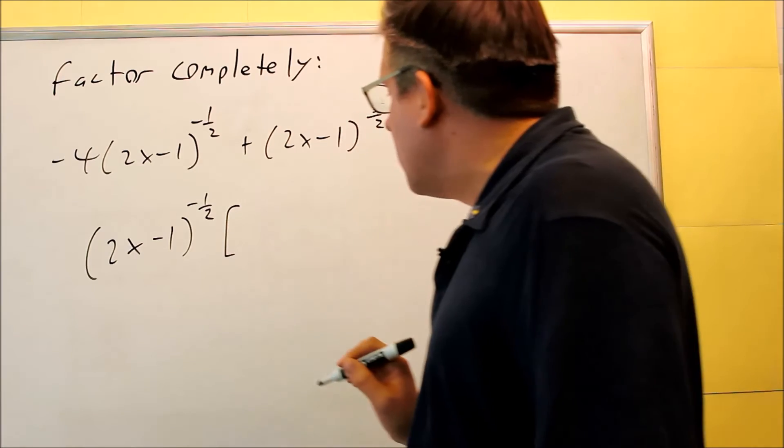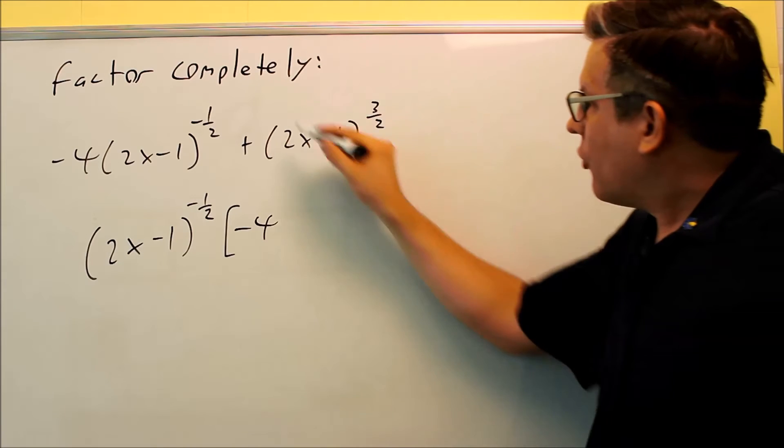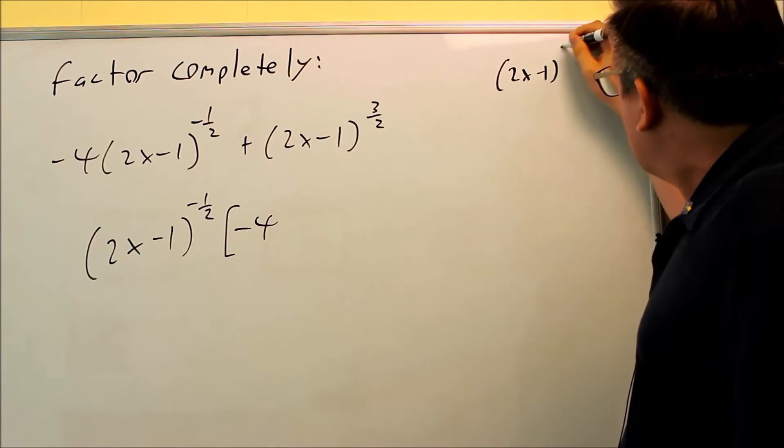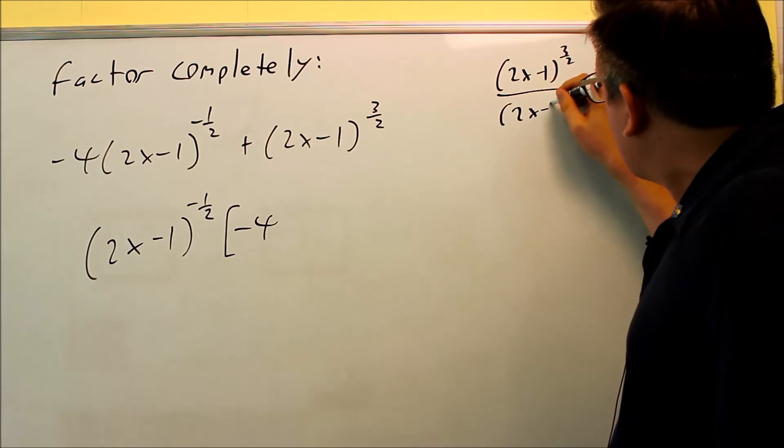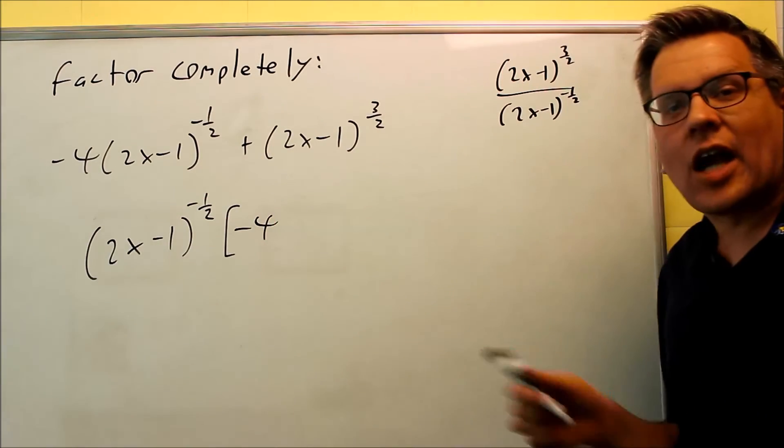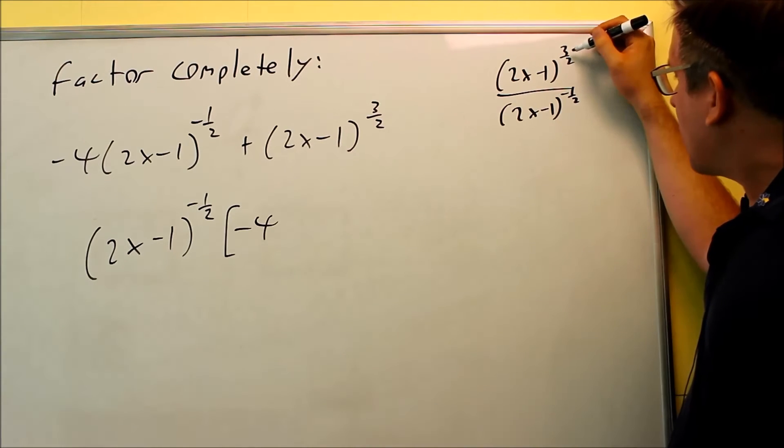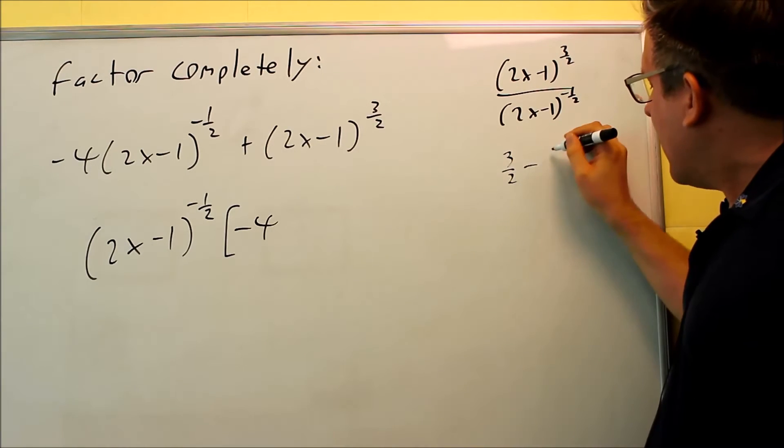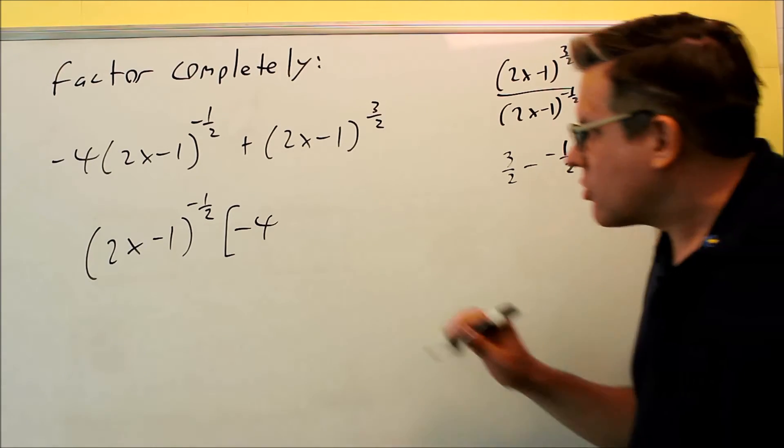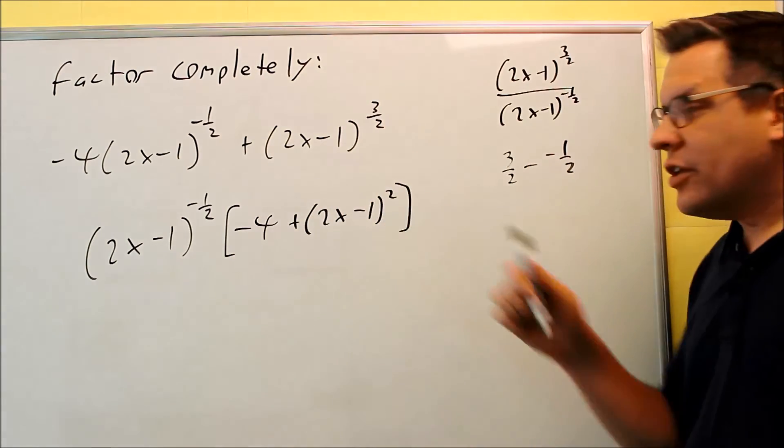Then, what's left over inside, these brackets here, I'll just get a negative 4 left over there. Now, for the 1 on the end, again, when you're dividing here, it's kind of like you're doing this one, and then 2x minus 1 to negative 1 half here. Whenever you factor something on the outside, take a common factor out. Again, it's like you're doing division. So I'm going to do 3 halves minus negative 1 half, and you're going to get 4 halves, which is going to be 2. So what you're left with is 2x minus 1 squared on the inside.